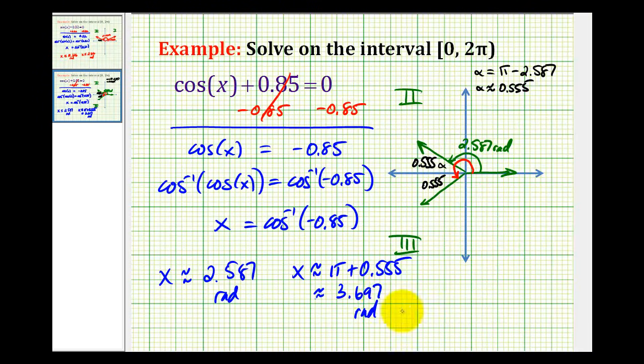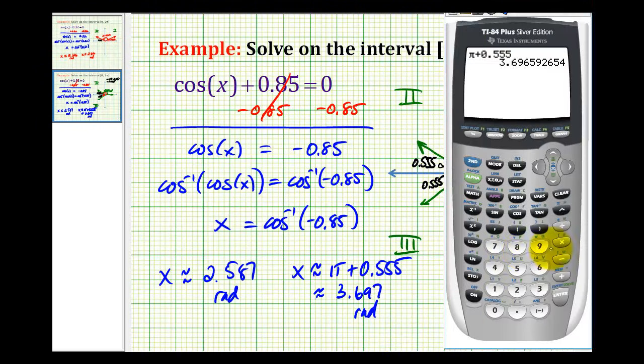And let's just go ahead and verify these solutions. We can do it pretty easily by just typing in cosine 2.587. Should be approximately negative 0.85. And it is, notice off a little bit because we did round. And then also cosine 3.697. And again, it looks good.